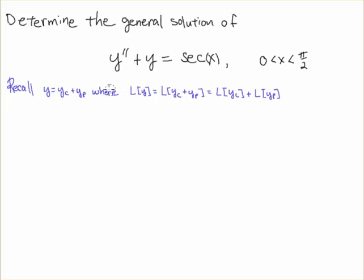Recall that if L is our operator, like in this case that's the second derivative plus the number one times y, then that operator distributes through the solution and what happens is the operator applied to the complementary function is zero, but the particular solution just leaves us the right hand side.